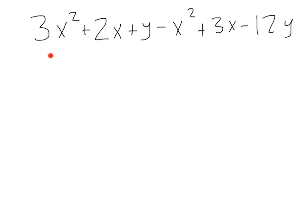Here we've got quite a messy problem here. 3x squared plus 2x plus y minus x squared plus 3x minus 12y. To start, we want to find out where our like terms are. Here I see an x squared term, and I see another x squared term here. So I can go ahead and put those together. 3x squared minus 1x squared. That's going to give us 2x squared.